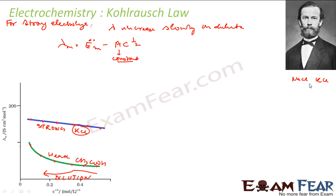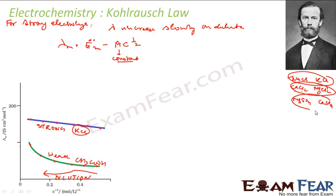MgCl₂ will produce one ion of 2+ charge and two ions of 1- charge. MgSO₄ will do the same thing, so they will have the same value of A. Similarly, CaSO₄ will produce one ion of 2+ charge (Ca²⁺) and one ion of 2- charge (SO₄²⁻). So these pairs will each have the same value of A. The value of A depends on the types of cations and anions produced.